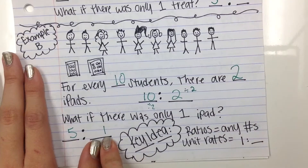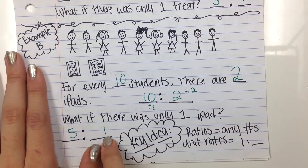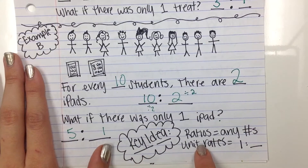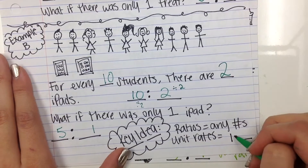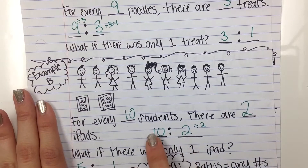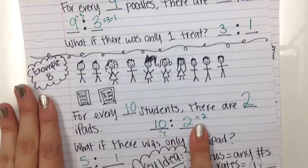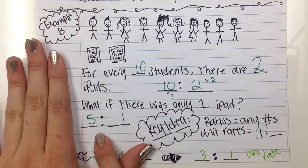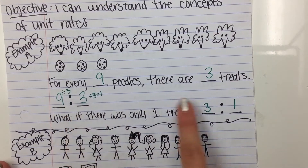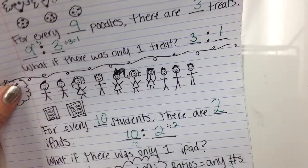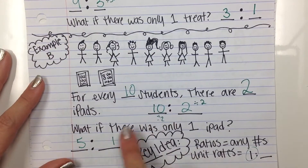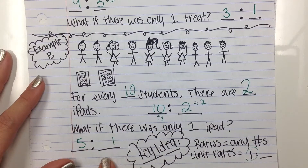This is called a unit rate — this is our key idea. Unit rates have the number one somewhere in the ratio. So this is just a regular ratio, and this is a unit rate. These are also called equivalent rates because they have the same value.